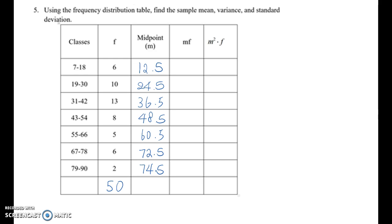So m times f, which means the 12.5 appears 6 times. So this blank must be 12.5 times 6. If you do so, you will get 75. Same step.